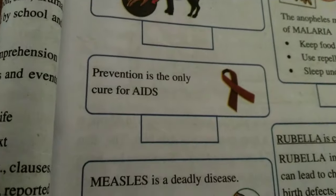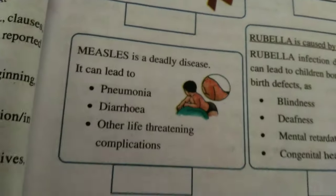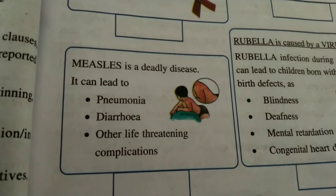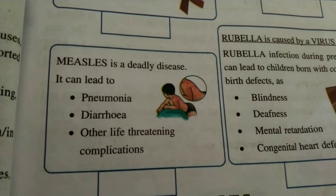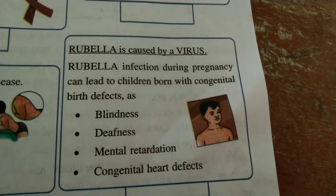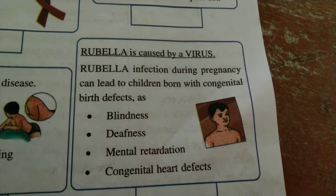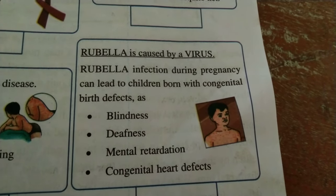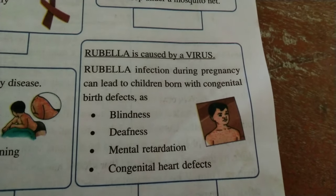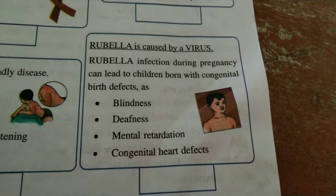Malaria. Next, prevention is the only key — this is the H symbol. Then, measles is a deadly disease. Next, rubella is caused by a virus. Rubella infection during pregnancy can lead to children born with congenital birth defects.